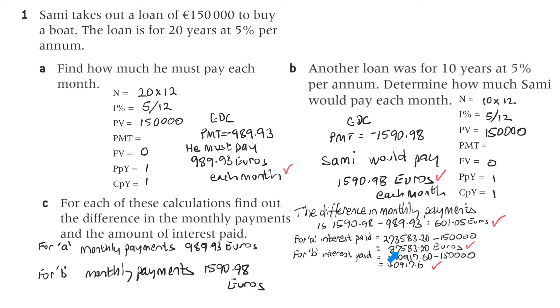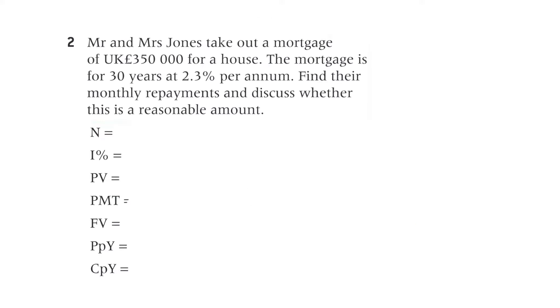For A, the interest paid is calculated from that loan calculation, and for B, it is calculated from the 10-year loan calculation.